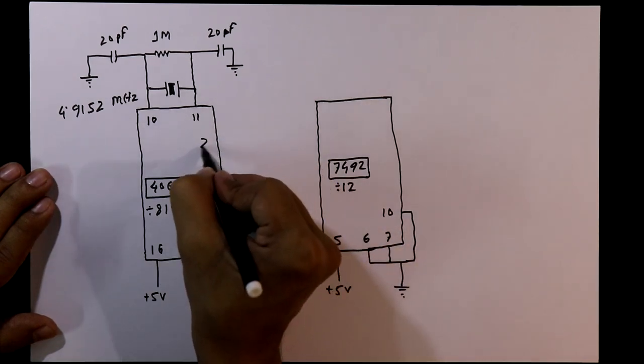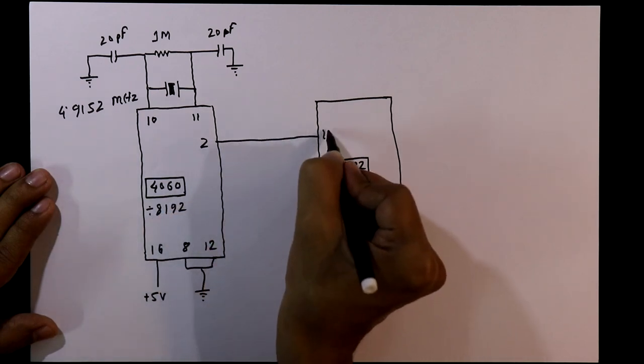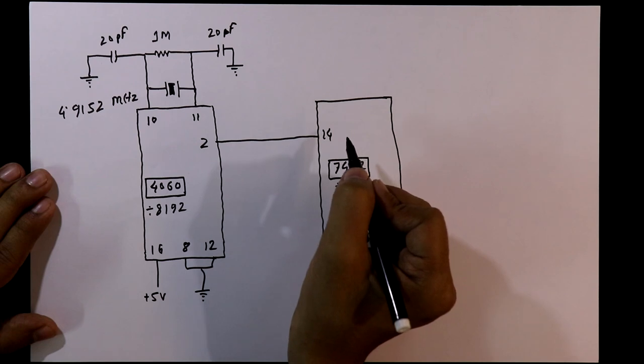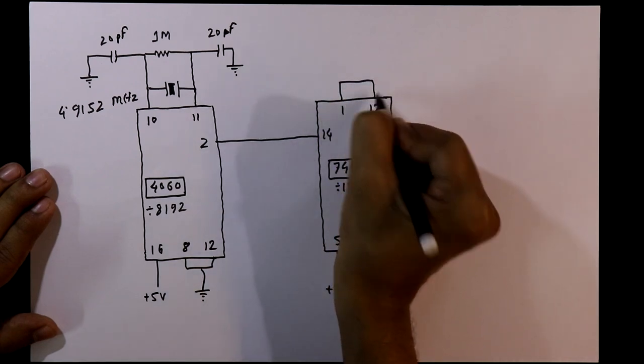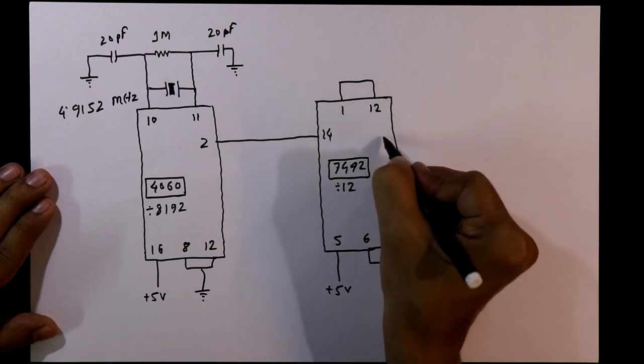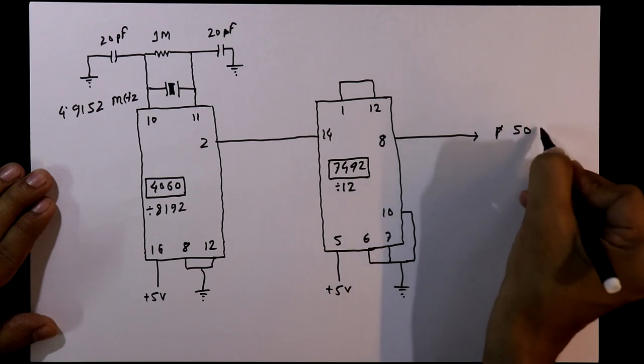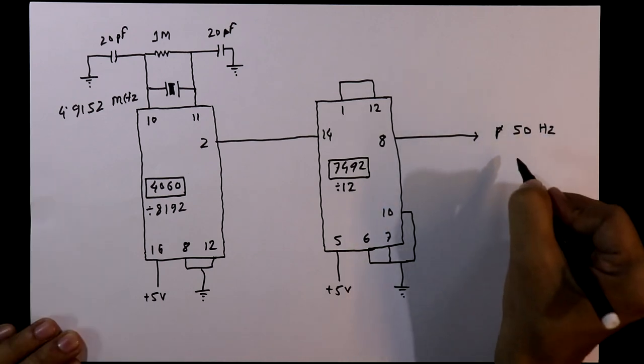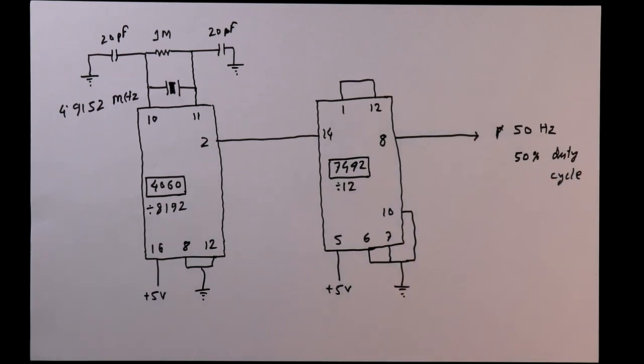Pin number 2 of 4060 should be connected to pin number 14 of 7492. Pin number 1 and 12, these two should be connected together. And we will take the output from pin number 8. Here we will get 50 hertz and the duty cycle will be 50 percent. Now we will see the breadboard connection and the output.